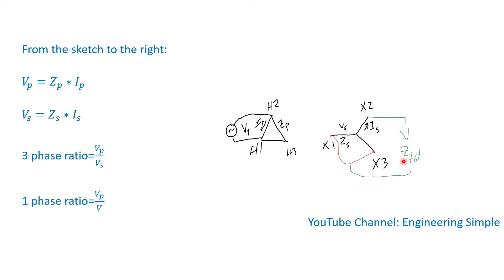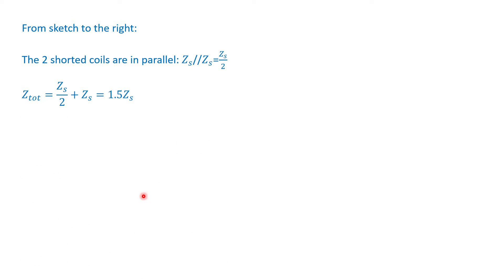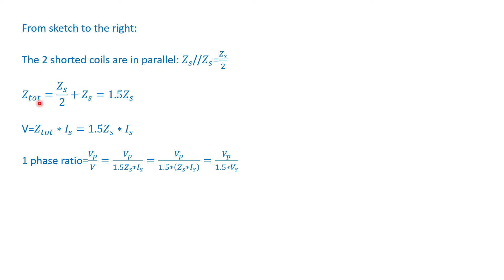With the shorted coils in parallel, the equivalent impedance of two equal parallel impedances is one half of one of them. So the total impedance is one half of the secondary impedance plus one times the secondary impedance, which equals 1.5 times the secondary impedance. From Ohm's law, the measured voltage is the total impedance times the secondary current, which is 1.5 times the secondary impedance times the secondary current. The single-phase ratio is then the primary voltage divided by this measured secondary voltage.